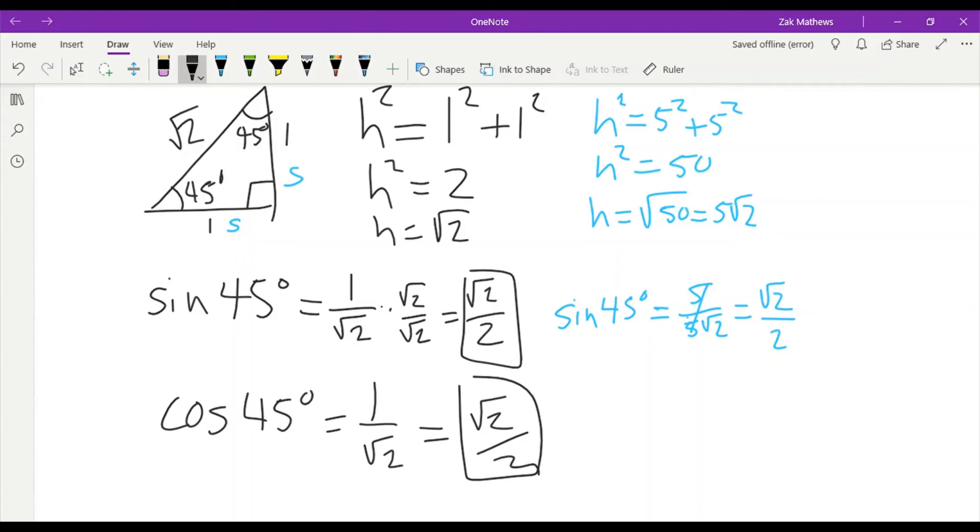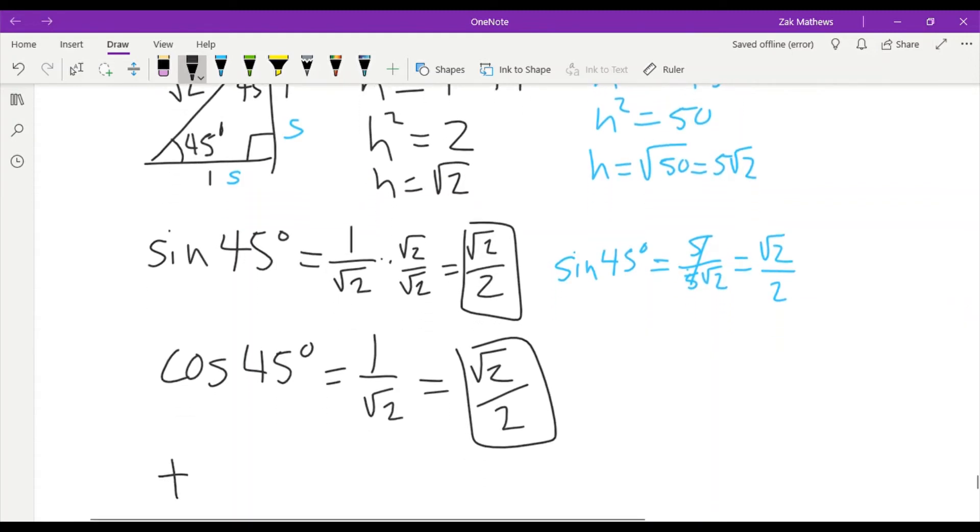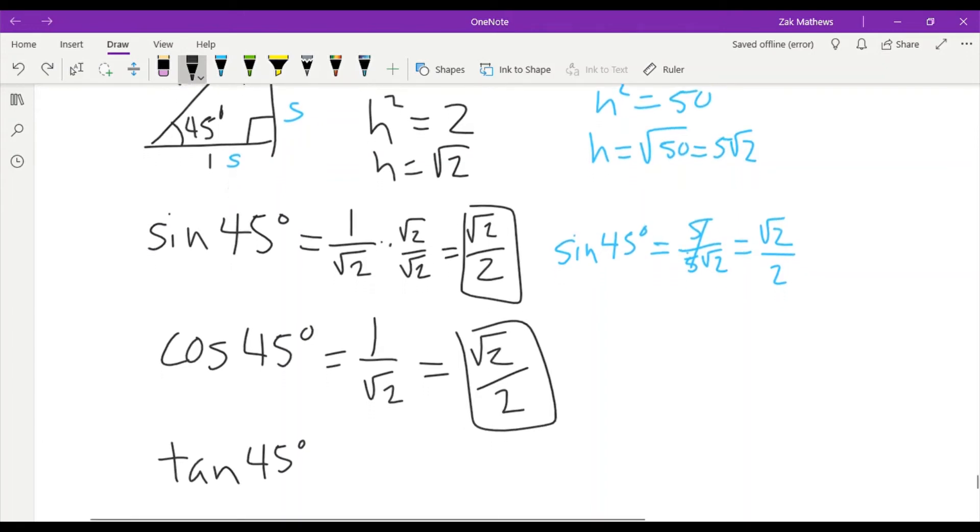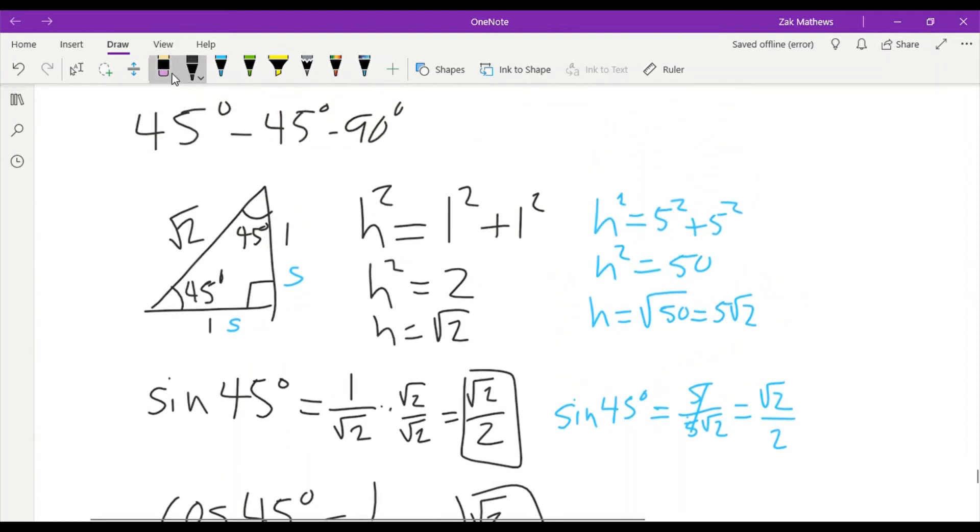And if I look at the last one, the tangent, if I look at tangent of 45 degrees, I would have the opposite, which is one, and the adjacent is one. So we have one over one, which is just one. So that is why this triangle is so nice. The 45-45-90, we get these exact ratios every single time.